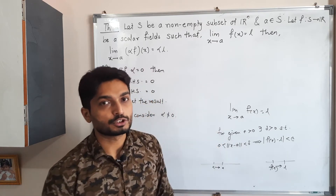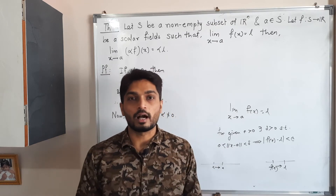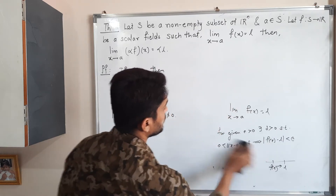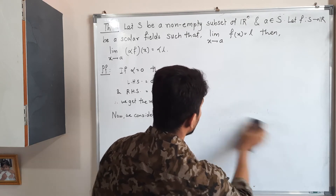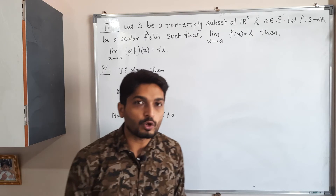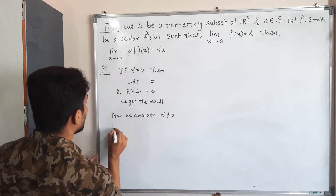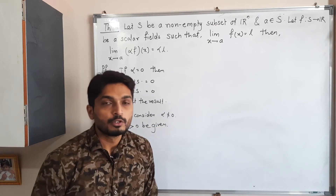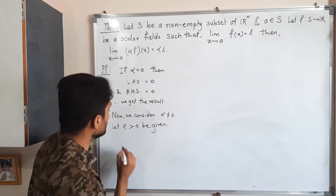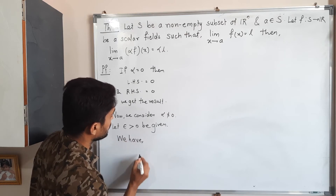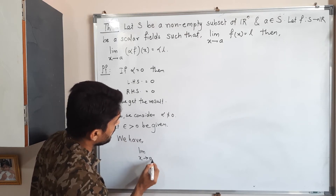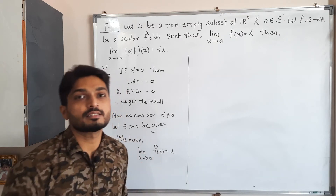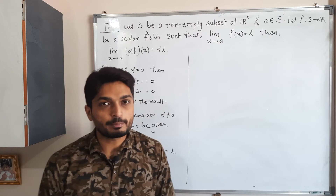In any proof involving limits, it is a game of epsilon and delta — for a given epsilon we try to find a suitable delta. So let epsilon greater than zero be given. The given information is that the limit of f(x) as x tends to a equals l, and we now apply the epsilon-delta definition using this.